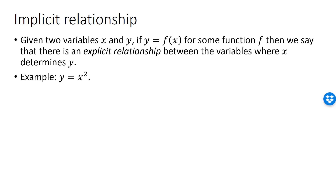An example of an explicit relationship is y equal to x squared. The important point here is that once you know the value of x, you can easily find the value of y. Since y is a function of x, we also know that given a specific value for x, there is a unique value of y that satisfies the relationship. The opposite, however, need not be true — for a given value of y, we could have several x values that satisfy the relationship.